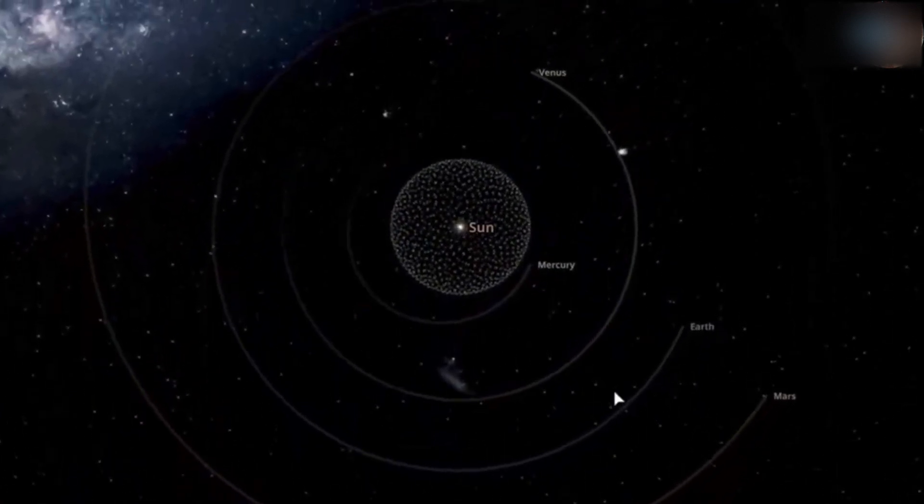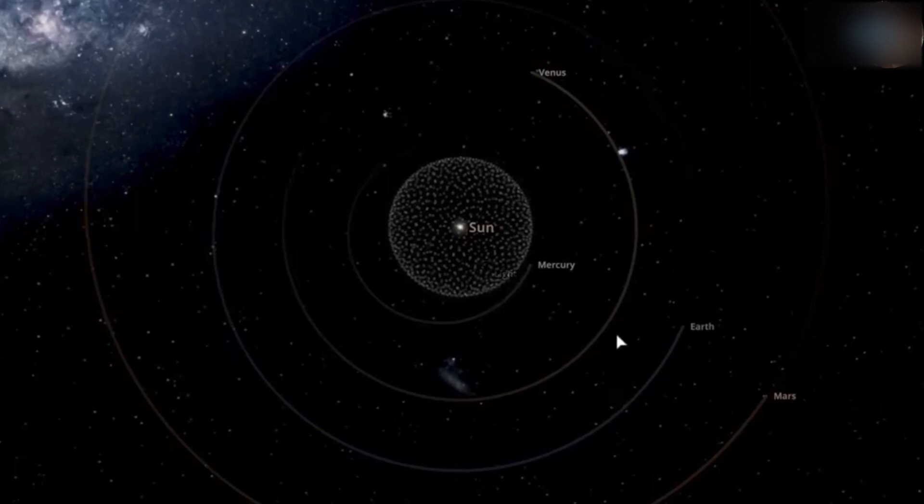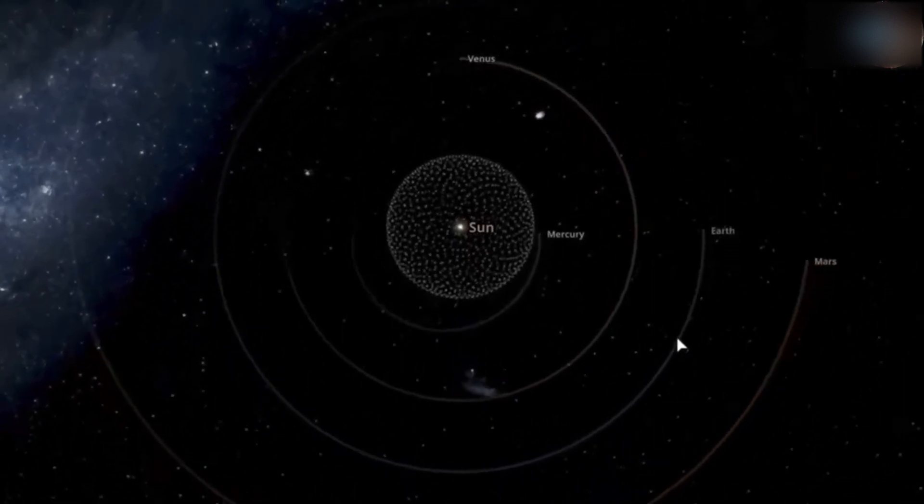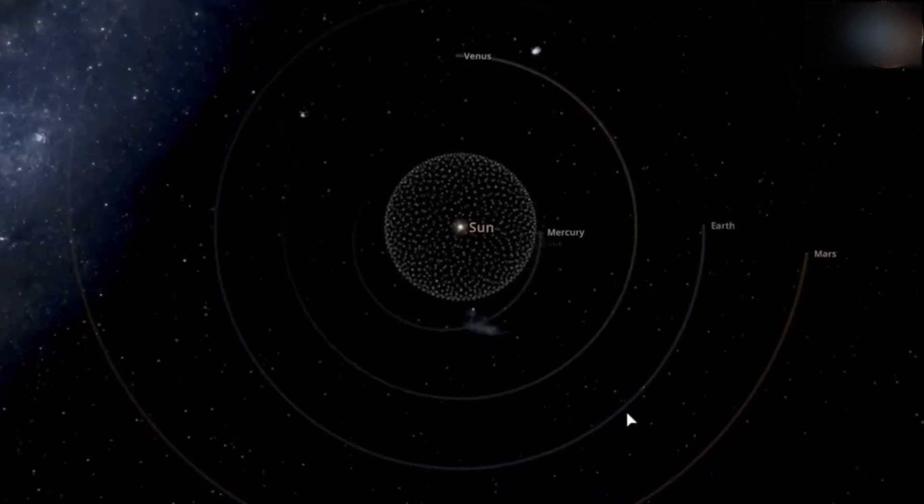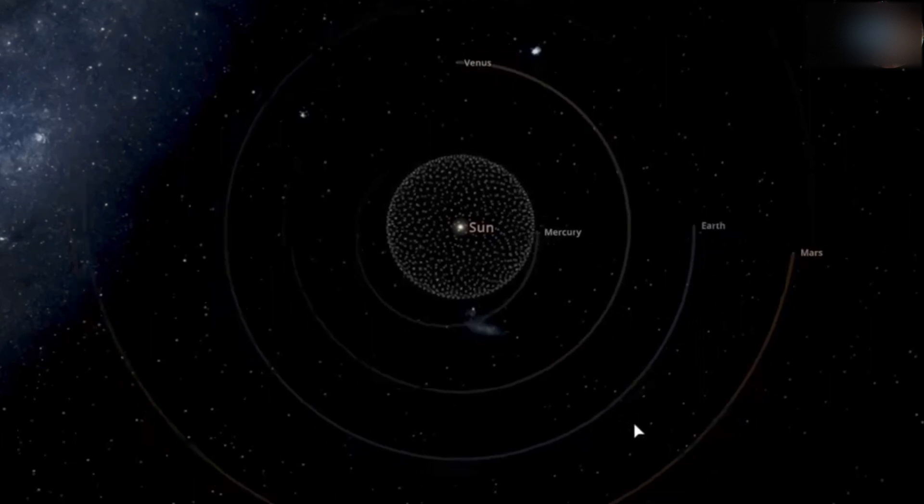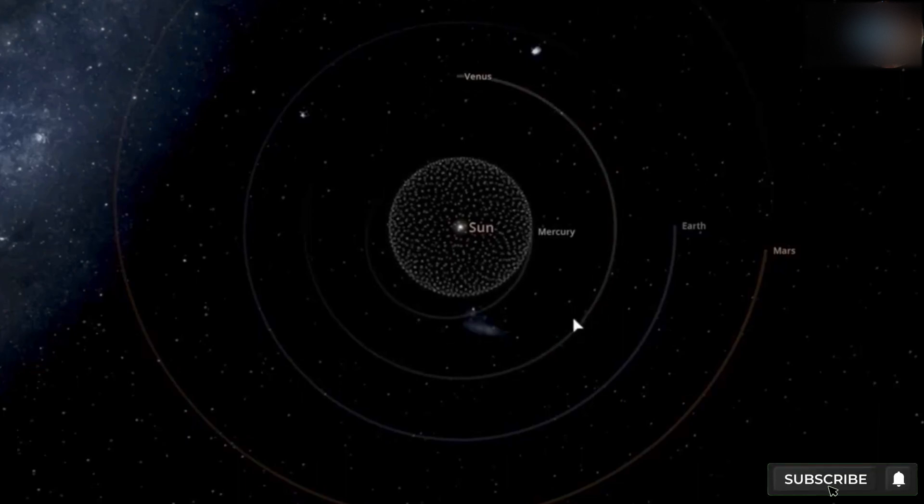Light exhibits both wave-like and particle-like properties. This phenomenon is known as wave-particle duality. It can behave as electromagnetic waves, or as discrete packets of energy called photons. Photons, which make up light, are massless particles. They have no rest mass, and they always travel at the speed of light. Light is the fastest known entity in the universe. Nothing can exceed or match its speed.